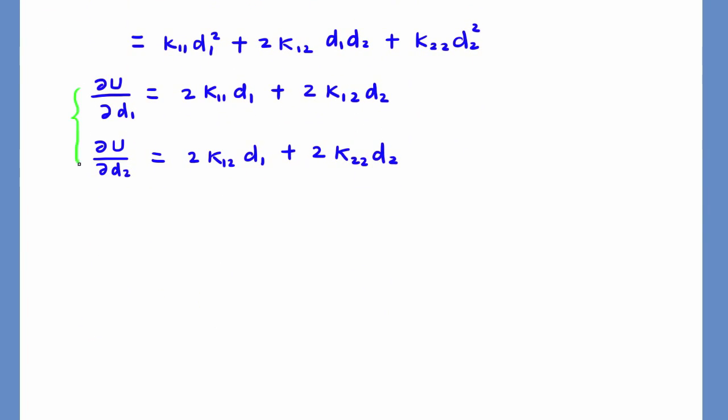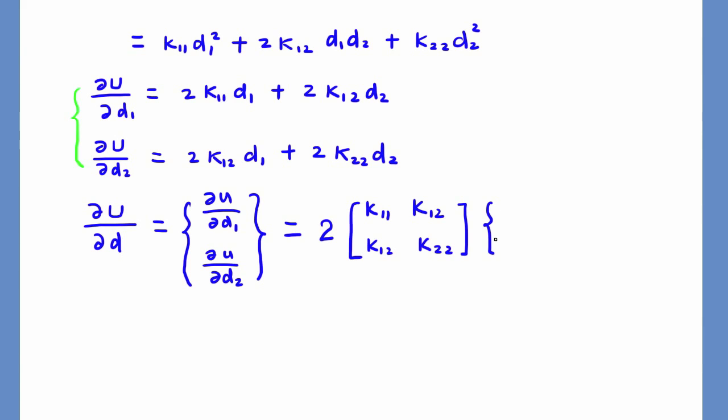Let's organize them together and write in matrix form. We have quadratic dKd taking derivatives with respect to ds is equal to 2Kd. Please note the coefficient 2 here.